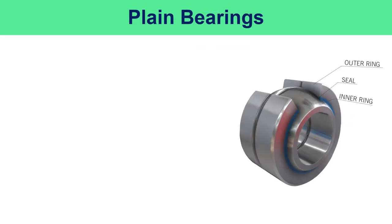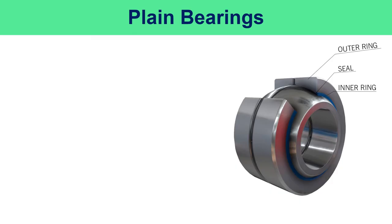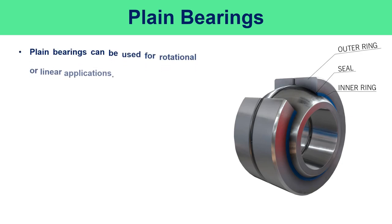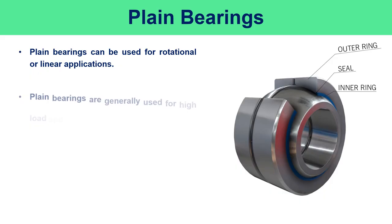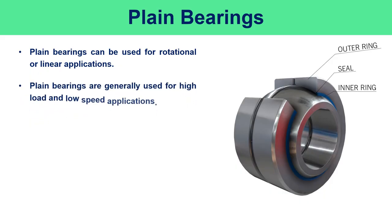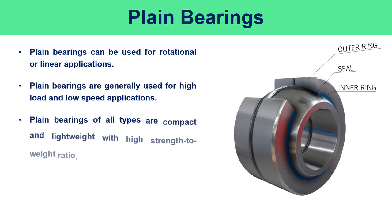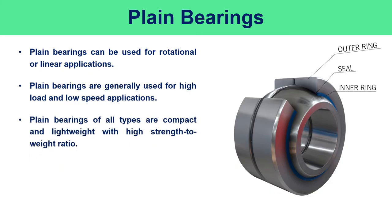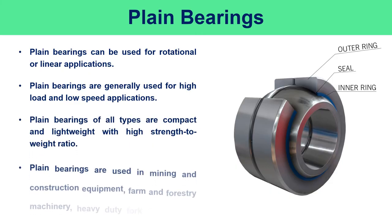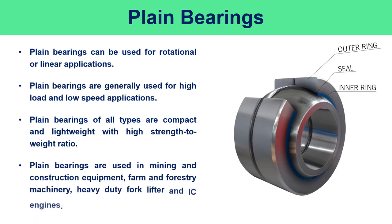Plain bearings operate on the principle of sliding friction and employ no rolling elements. They are generally quieter than anti-friction bearings as they have no moving parts, and can be used for rotational or linear applications. Plain bearings are generally used for high-load and low-speed applications, and are compact and lightweight with a high strength-to-weight ratio. They are used in mining and construction equipment, farm and forestry machinery, heavy-duty forklifts, and diesel engines.